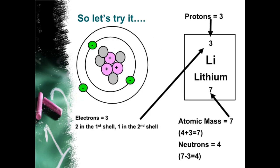So let's try it. Electrons equals three, two in the first shell, one in the second shell. Protons equals three. Protons, electrons and atomic number are just the same in numbers. Next is atomic mass equals seven. Just add the number of neutron to the number of proton or electron or atomic number to get the atomic mass or weight. Four plus three equals seven. Neutrons equals four. Just subtract the atomic mass to the number of protons. Seven minus three equals four.